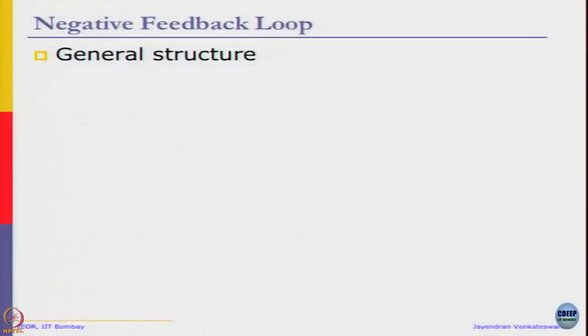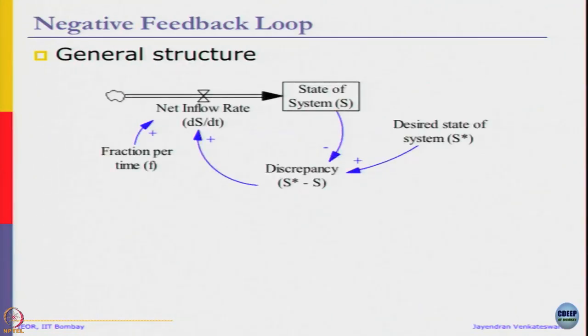Let us look at a general stock flow diagram of this negative feedback system, or balancing or goal-seeking system. You can simply represent state of the system as a rectangle with this net inflow rate which flows into the stock and changes it. We have desired state of the system, denoted as S star. We take the discrepancy and adjust that discrepancy some fraction f every time unit until the desired state is achieved. This is a very general structure of the system.